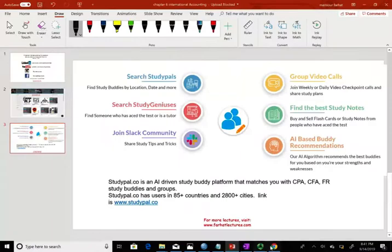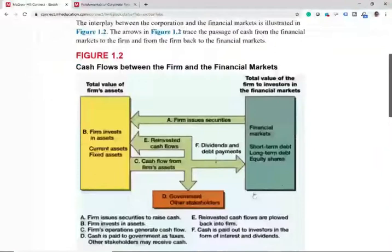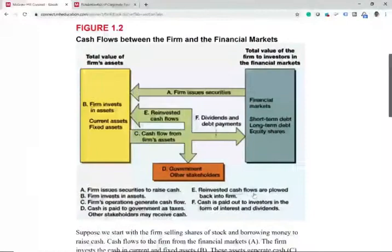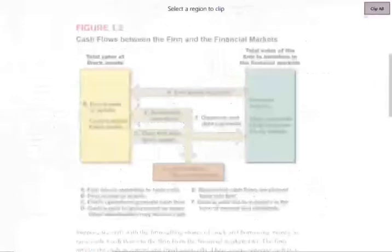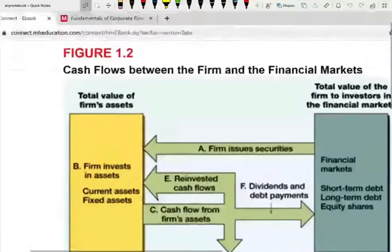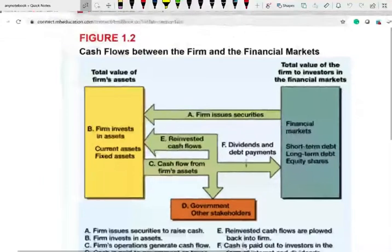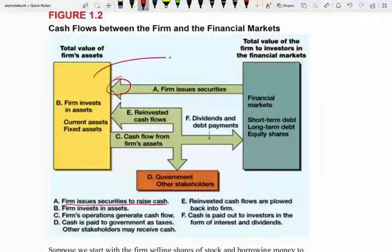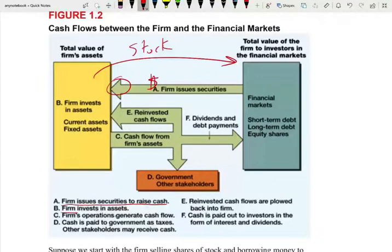Let's go ahead and take a look at the interplay between a corporation and the financial market. Let's take a look at this graph that summarizes basically the steps, or what we need to know in general about this relationship. Let's look at these arrows. The first thing is this: the firm issues securities to raise cash. This is arrow number one. The firm gives the financial market stocks — they sell them their stocks and the financial market gives them money.